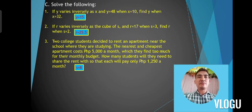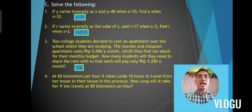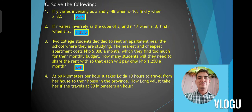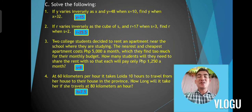Problem number 4: at 60 kilometers per hour it takes Loida 10 hours to travel from her house to their house in the province. How long will it take her if she travels at 80 kilometers per hour? The correct answer is 7.5 hours.